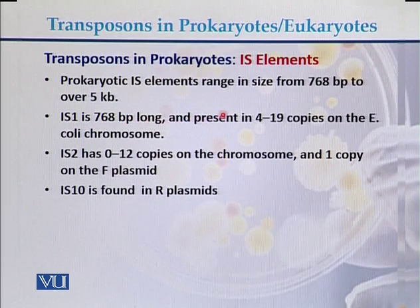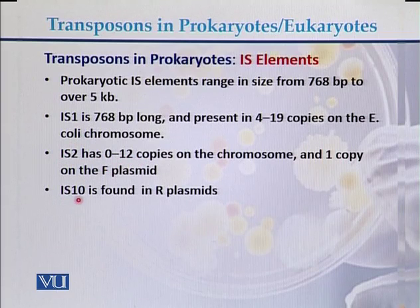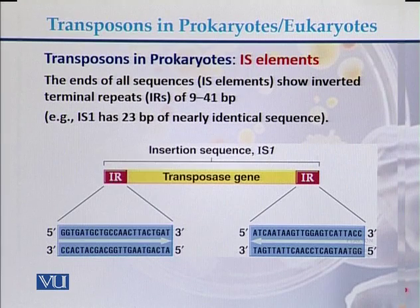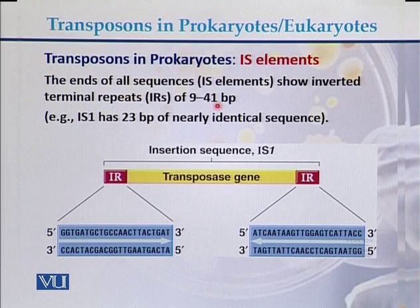IS1 is present in 4 to 19 copies in the E. coli chromosome. Another example, IS2, has 0 to 12 copies. IS10 is another example, which is found in R plasmids. The ends of all IS elements show inverted terminal repeats of 9 to 41 base pairs.